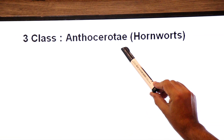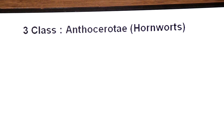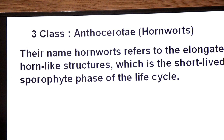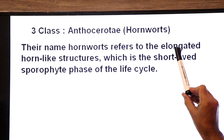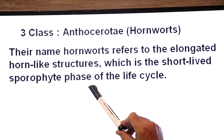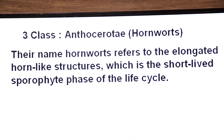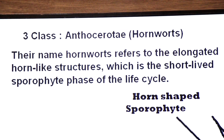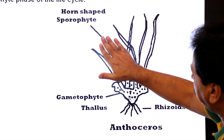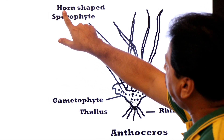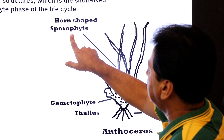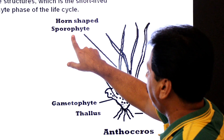Class Anthocerotae — whose members are commonly known as hornworts. Their name 'hornworts' refers to the elongated horn-like structure, which is the short-lived sporophyte phase of the life cycle. The main plant is the gametophyte; above it you can see the sporophyte. Their sporophyte is horn-shaped, so they are called hornworts because the sporophyte looks like the horn of an animal.